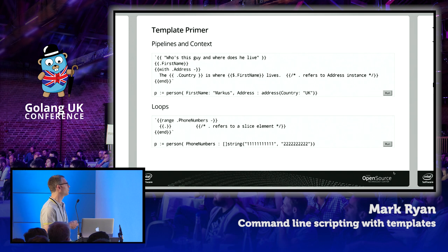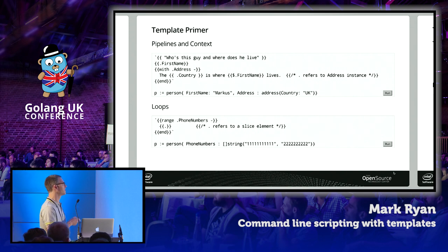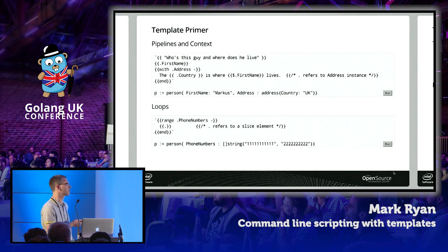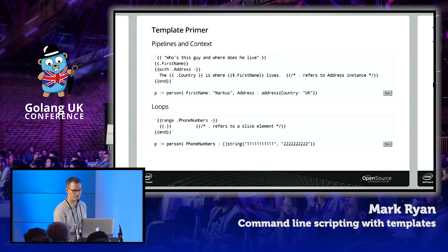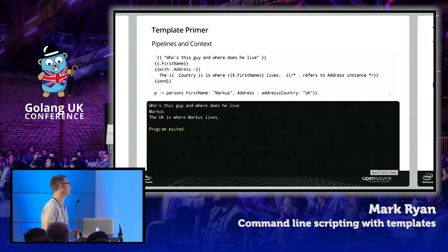You can change the meaning of the context with various directives. One example is with. With changes the current context to its argument — so within a with block, dot is actually p.Address. So dot.Country evaluates to p.Address.Country, which is UK. If you need to access the top level context from inside a with block, you use dollar dot. Dollar dot evaluates to p.FirstName even inside the with block, so it evaluates to Marcus.